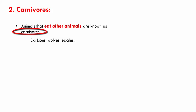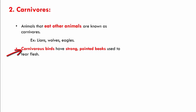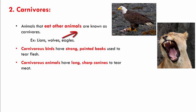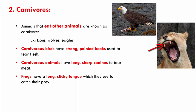Examples of carnivores include lions, wolves and eagles. As against herbivores which eat only plants, carnivores eat only other animals. Carnivorous birds have strong pointed beaks used to tear flesh. Carnivorous animals have long sharp canines, as seen in this picture of a lioness, which help them to tear meat.